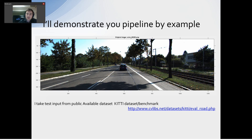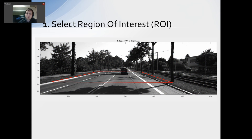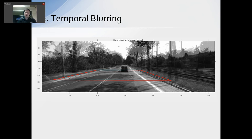I'll demonstrate the pipeline by example. I take test input from publicly available dataset Kitty. I select region of interest, the region in which I'm interested. Forget about anything else, but concentrate on this region.